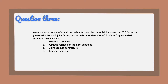Question three: in evaluating a patient after distal radius fracture, the therapist discovers that PIP flexion is greater with the MCP joint flexed compared to when the MCP joint is fully extended. What does this indicate? A, extrinsic tightness. B, oblique retinacular ligament tightness. C, joint capsule contracture. Or D, intrinsic tightness.